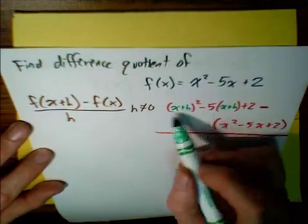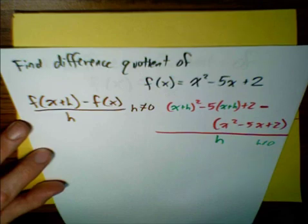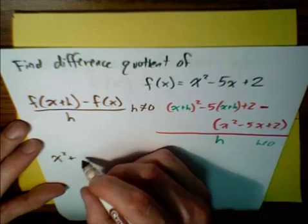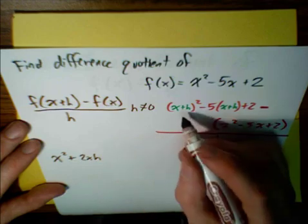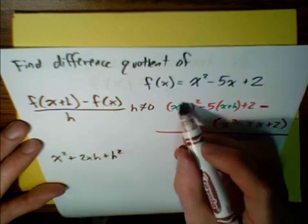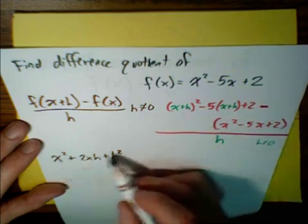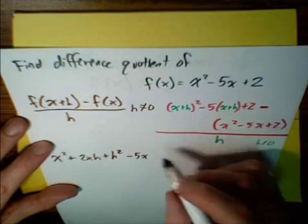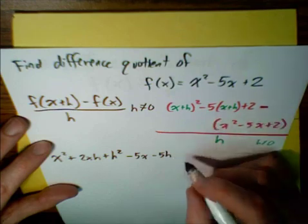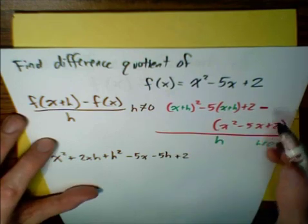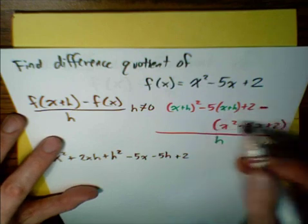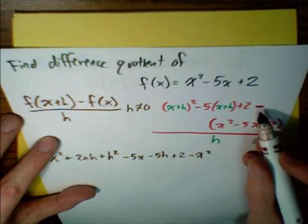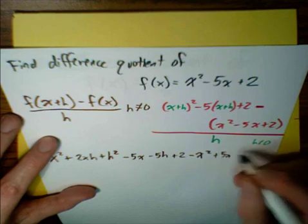Now, squaring the binomial x plus h gives us x squared plus 2xh plus h squared. Then using the distributive property, minus 5 times the quantity x plus h gives minus 5x minus 5h, plus 2. This minus sign is in front of the entire original trinomial, so we subtract it: minus x squared, minus negative 5x which is plus 5x, minus 2.